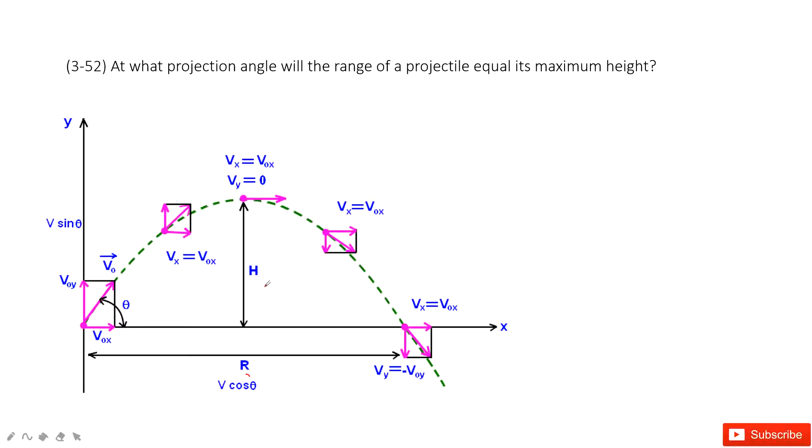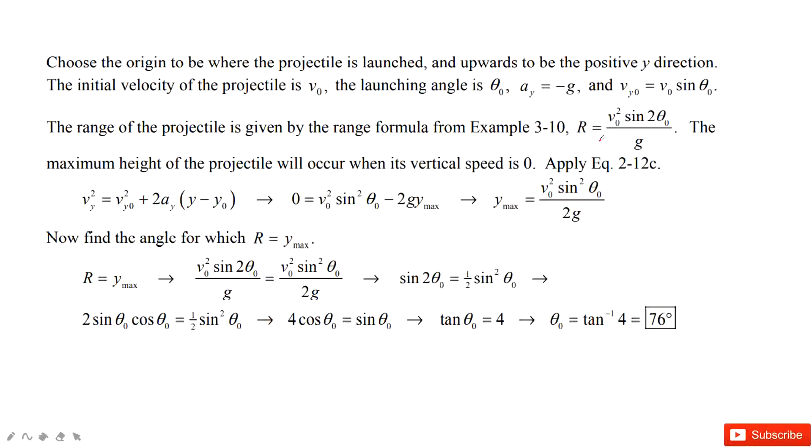As we learned in the lecture, we have one formula for r. Do you remember this one? You can see the range is decided by initial velocity and angle theta.